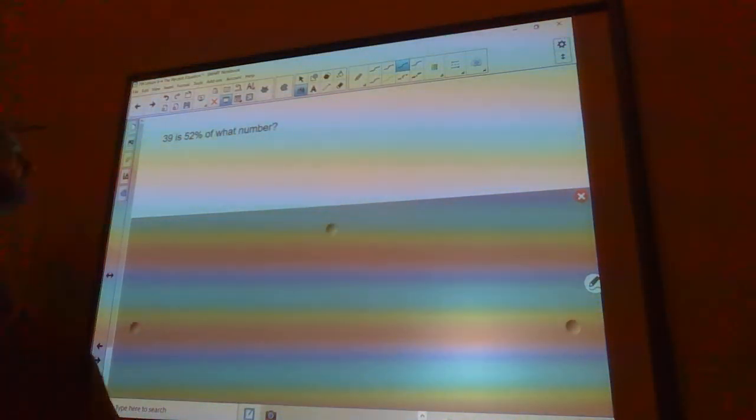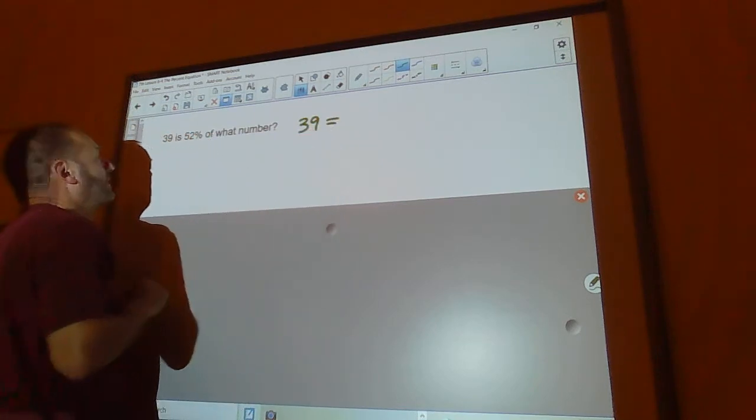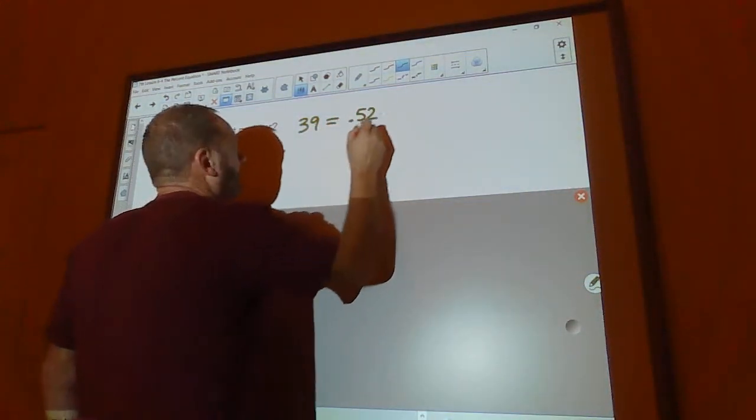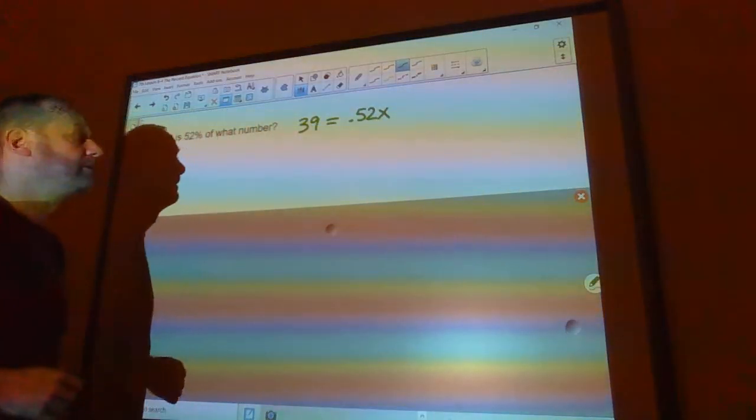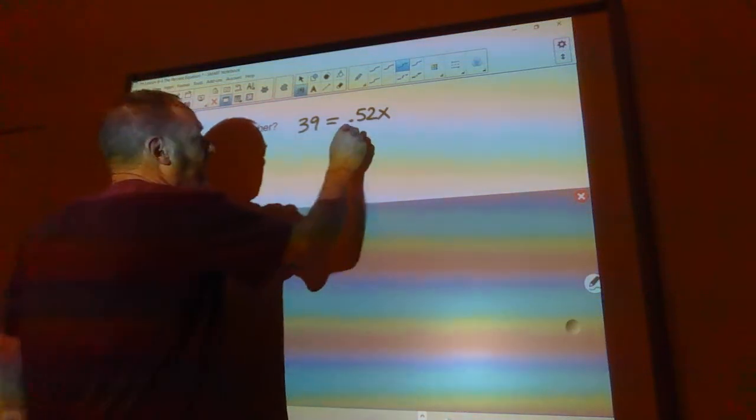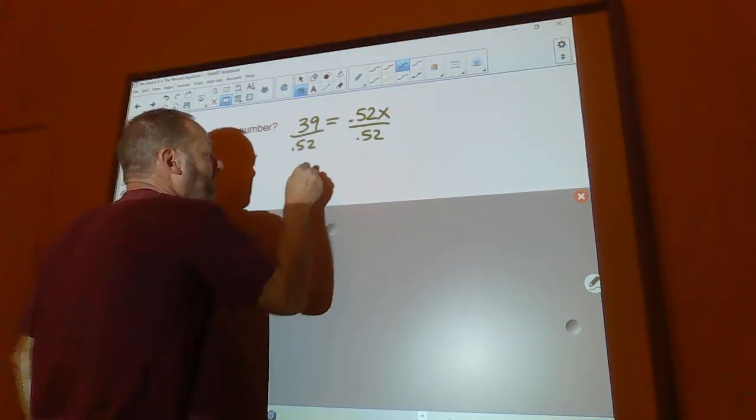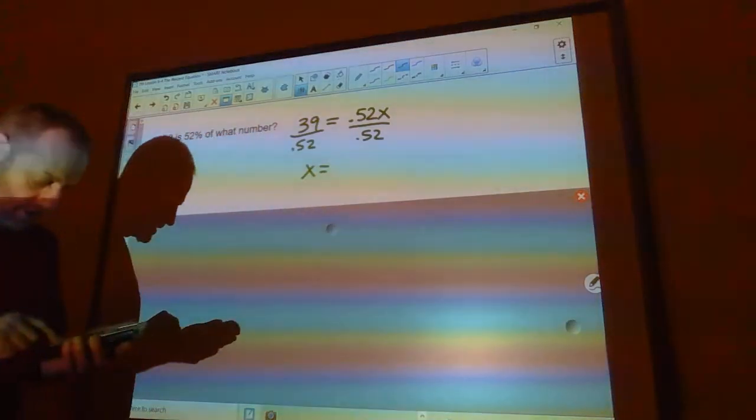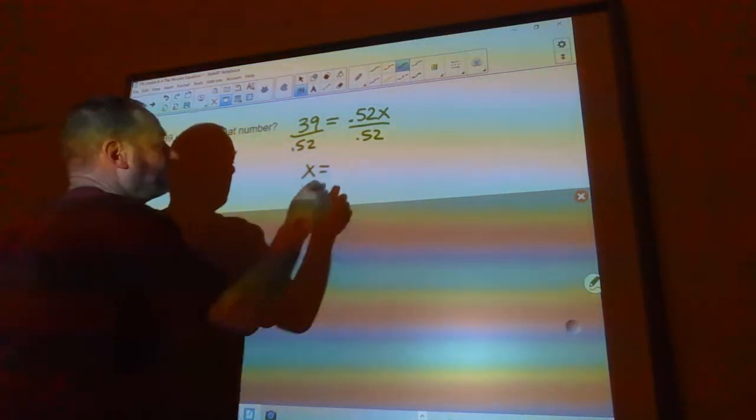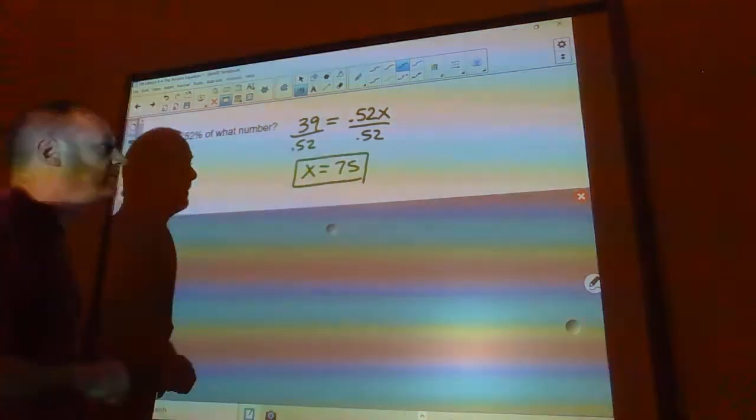Okay, 39 is 52% of what number? That means 39 is 52%. That's 0.52 of what number? x. Okay, now I'm going to solve this by dividing by 0.52. So, x will be 39 divided by 0.52 is 75. I'm sure you've got 75.